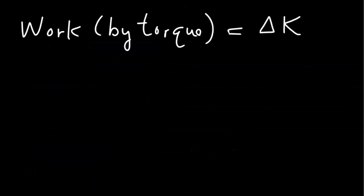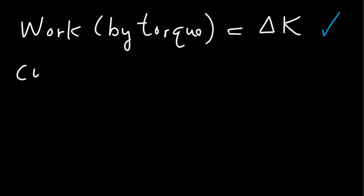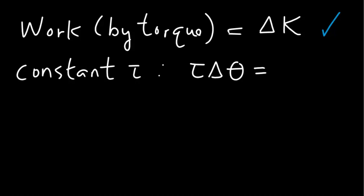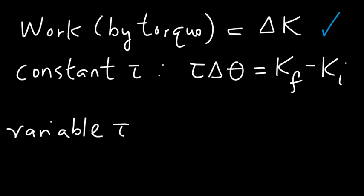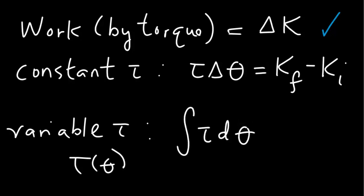As a conclusion, the work-kinetic energy theorem for a rotating system can be divided into two cases. The first case is when the torque is constant: torque times the angular displacement equals the change in kinetic energy of rotation. If you have a variable torque — namely a torque that depends on angle — then the left-hand side should involve an integral, and the right-hand side is as before: the change in kinetic energy of rotation of the system.